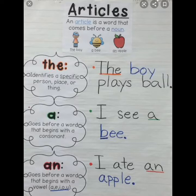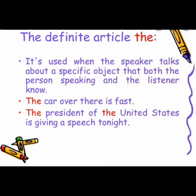'An' goes before a word that begins with a vowel sound: a, e, i, o, u — for example: I ate an apple. 'The' is used when the speaker talks about a specific object that both the speaker and the listener know. For example: the car over there is fast. The President of the United States is giving a speech tonight.